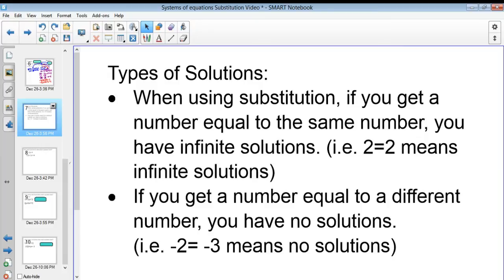So, let's move on to the next one. So, types of solutions. Everything that you've seen prior to this, in terms of substitution, has been a solution. Right? One solution. If we have one solution, we call it a solution and we move on with our lives. So, if you ever say how many solutions, you'd say one and you give what that solution is. So, using substitution, if you get a number equal to that same number, like 2 equals 2, well, 2 is always going to be equal to 2. So, that means you have infinite solutions.